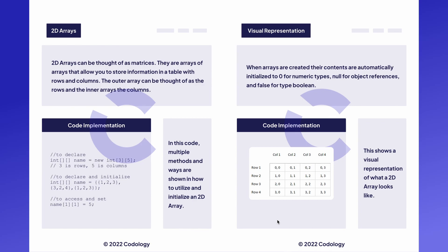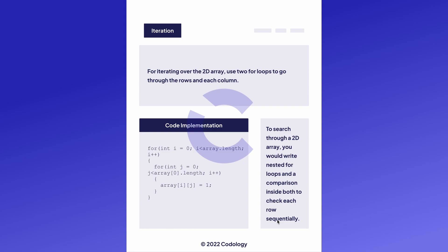For iterating over 2D arrays you use two for loops to go through the rows and each column. For example, let's say we have a previously defined 2D array and we want to set all of the elements equal to 1. You would write a for loop that goes from 0 to array.length — that looks at the outer row. Then for the columns you would write an inner loop using another variable, set it equal to 0, and iterate through the first array checking its length. Then you would write array[i][j] — your indices — and set them equal to 1.